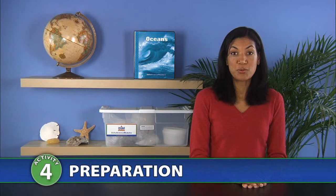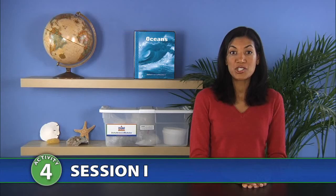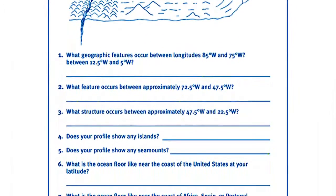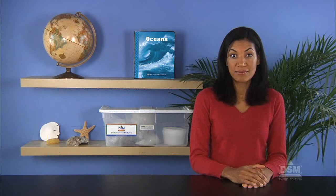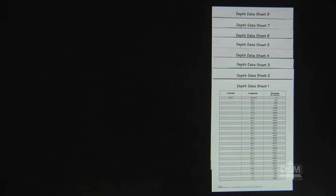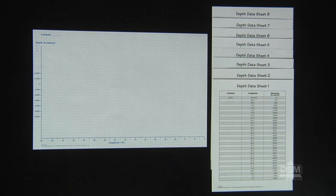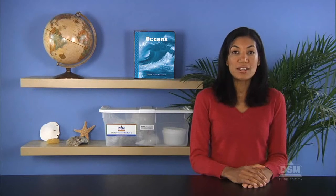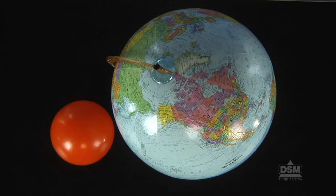To prepare for session 1, make a copy of Activity Sheet 4 Part A for each student and a copy of each depth data sheet. Each team of four will need one of the eight depth data sheets, an 11 by 17 sheet of pre-printed graph paper, a pencil, and two rulers. You will also need a globe and a ball that bounces for a demonstration of how sonar works.